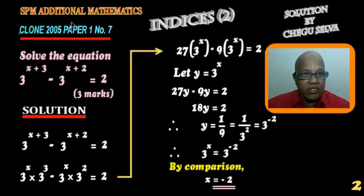Clone 2005, paper one number seven. You are asked to solve the equation 3 to the power of x plus 3 minus 3 to the power of x plus 2 equals to 2.